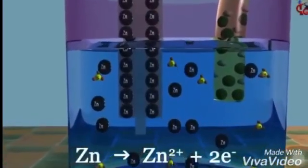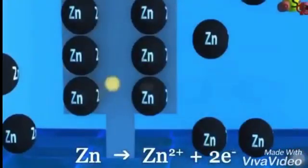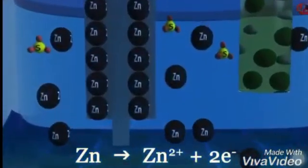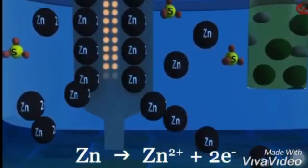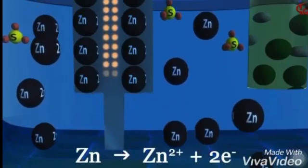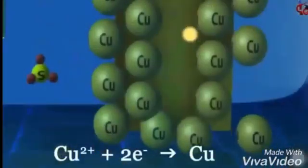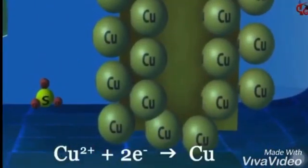For this reason, the zinc bar is oxidized, producing a zinc ion and two electrons per zinc atom. And the copper ions in solution gain two electrons and are reduced to copper metal.